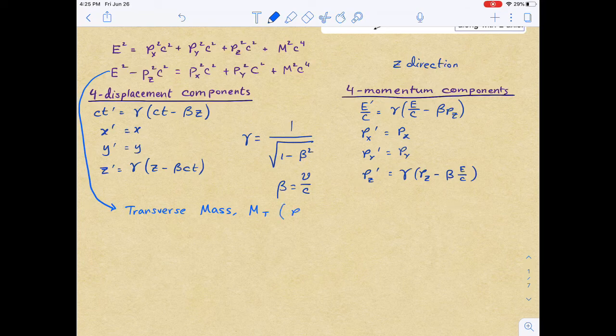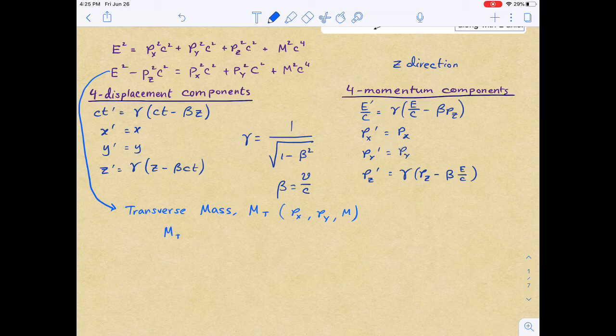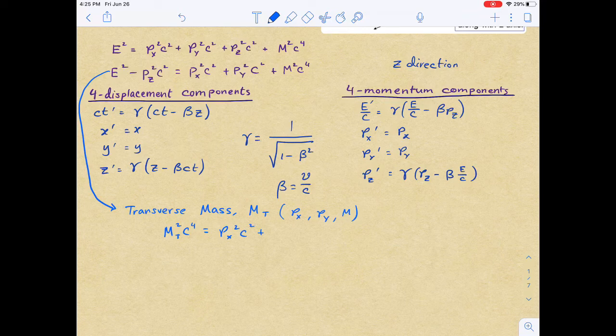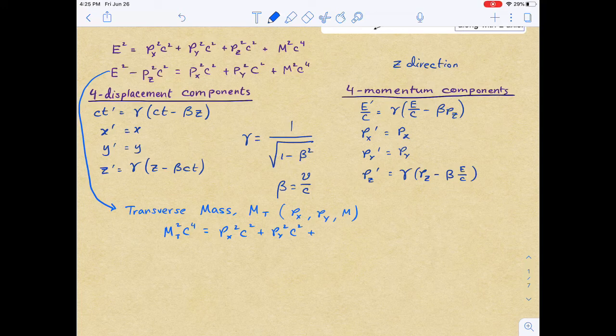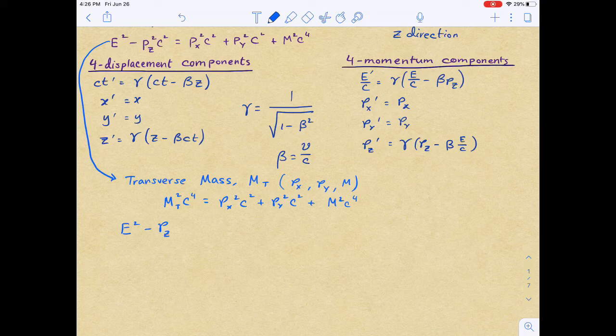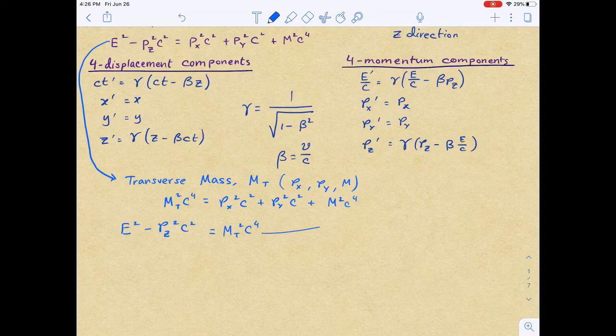Mt is a function of px, py, and m, which are all invariant in this case. So we define Mt squared c to the fourth as px squared c squared plus py squared c squared plus m squared c to the fourth. Essentially, what we have now is E squared minus pz squared c squared equals Mt squared c to the fourth, which is basically the same function as what is over here.